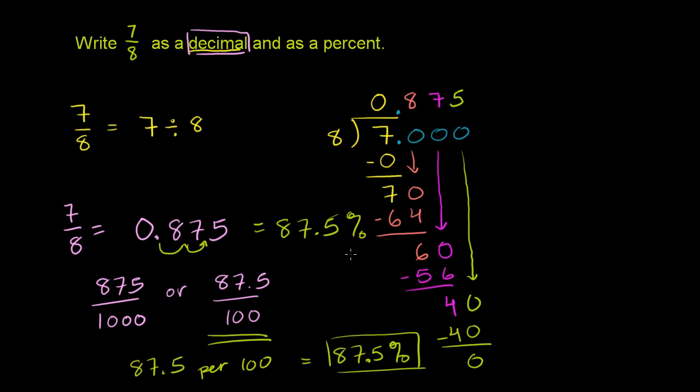Another way to remember, because sometimes you might get confused, do I put the decimal to the right, do I take it to the left, is that the decimal representation will always be smaller than the percent representation. And not only will it be smaller, but it'll be smaller by exactly a factor of 100, right? This is 100 times smaller of a number right here than just the 87.5. Obviously when you put this percent here, these become the exact same number.